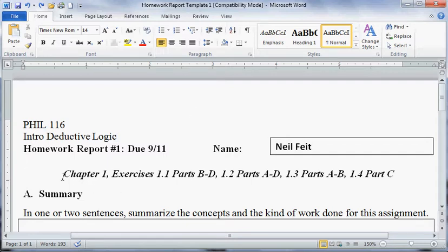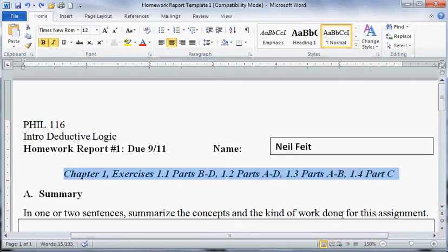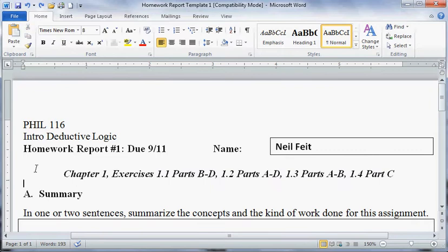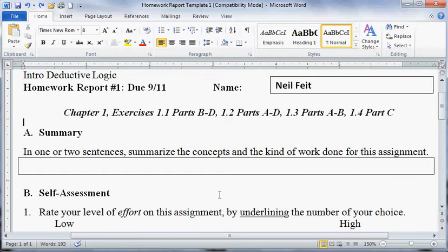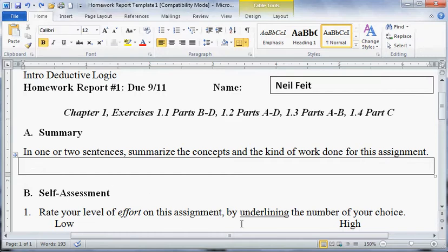At the top here, you see for each of these homework report templates, I've made seven of them available on the ANGEL site for our course, it gives you the exercises. Basically, you're going to do a lot of these exercises, over half, as many as possible. And you're going to fill in a few items for me. Part A here is a summary: in one or two sentences, summarize the concepts and the kind of work done for this assignment.